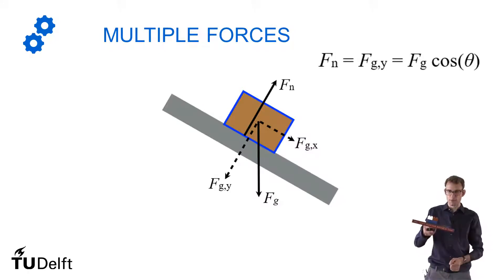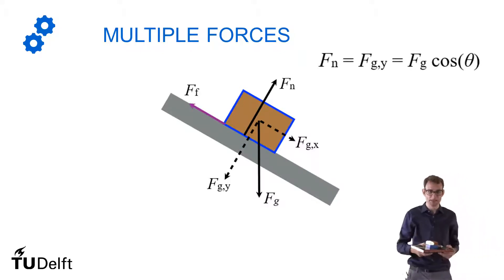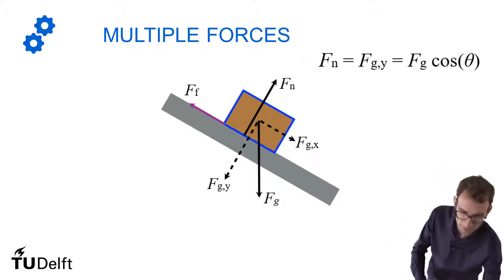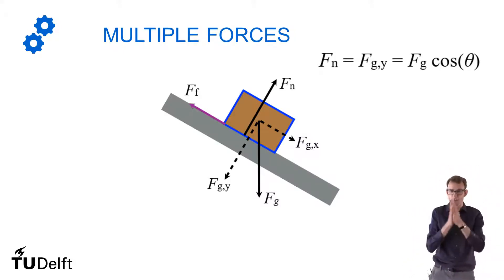Now, if I tilt the book a little bit, the block will still stay in place. So there must also be a force that compensates for the gravitational component along the surface of the book. And that, of course, is friction. So when do you get friction? Well, best known example perhaps is if you have cold hands and you rub them together. There's friction between your hands because of two reasons.